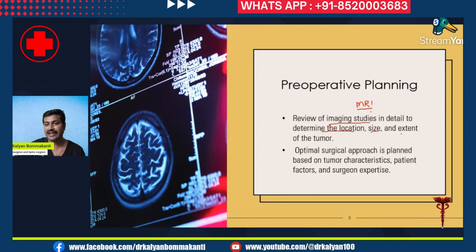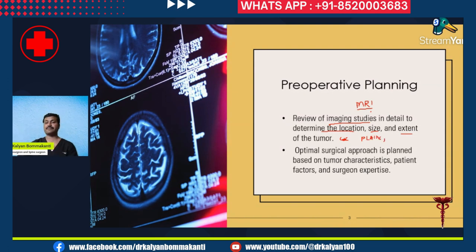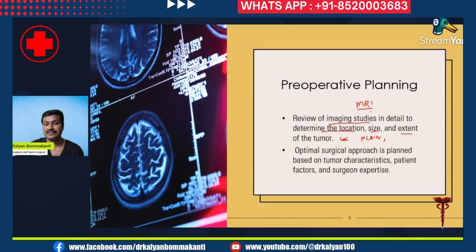Determine the exact location, size, and extent of the tumor. Also look for other characteristics: is there a plane, is the tumor well-defined or not? Look for the plane on T2-weighted images, and look for other features like presence of calcification, presence of cysts, presence of tumor edema. The optimal surgical approach is planned based on tumor characteristics studied on MR imaging, as well as the patient's characteristics, patient factors, and the surgeon's expertise.